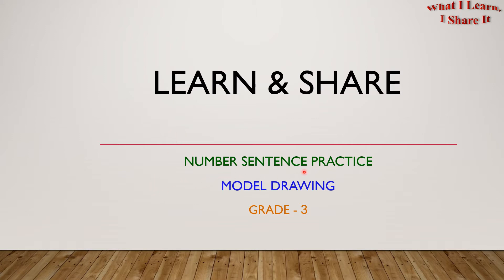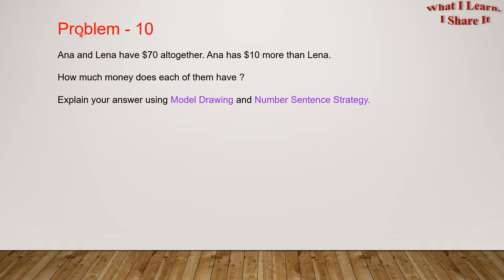We're doing number sentence practice using model drawing. Problem 10: Anna and Lena have $70 altogether. Anna has $10 more than Lena. How much money does each of them have? Explain your answer using model drawing and number sentence strategy.